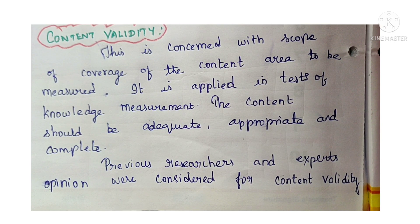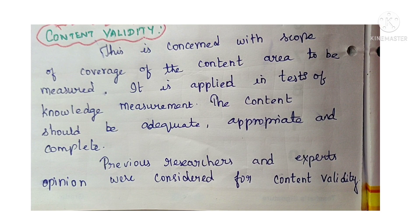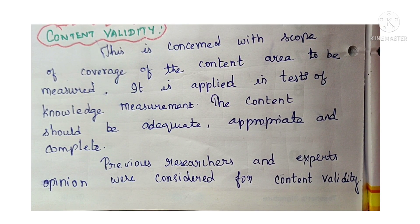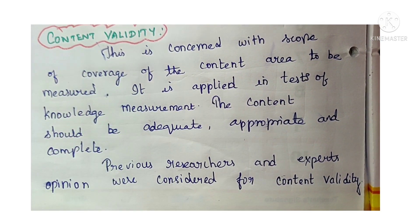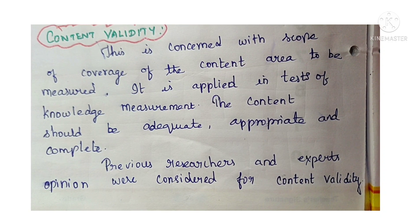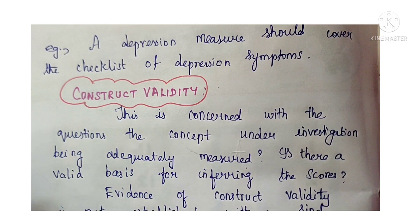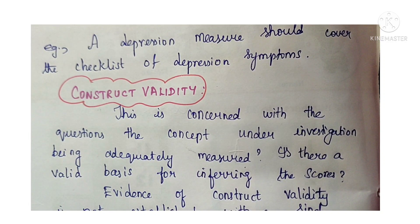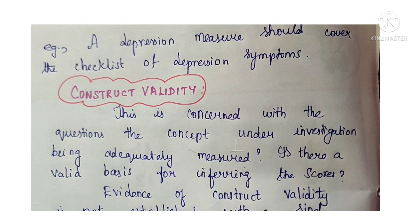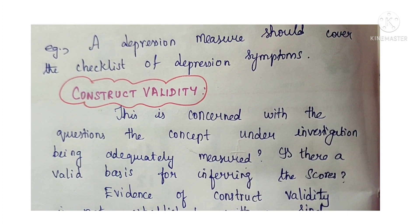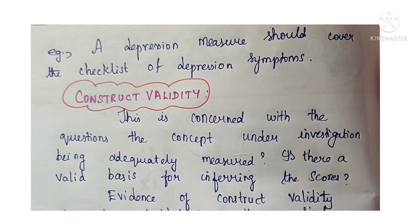This is done at MSc, PhD, and MPhil level. For content validity, you need not only nursing experts but also medical experts — and if your study relates to psychological issues, you get input from psychologists and psychiatrists. They check whether the content is appropriate, adequate, and complete. For example, a depression measure should cover the checklist of all depression symptoms; if something is missing, experts like psychiatrists or psychiatric nursing personnel will point it out so you can modify your tool.